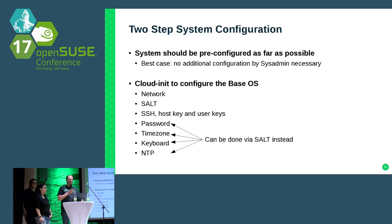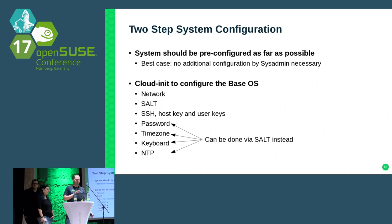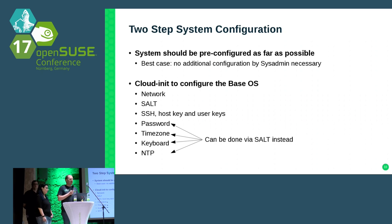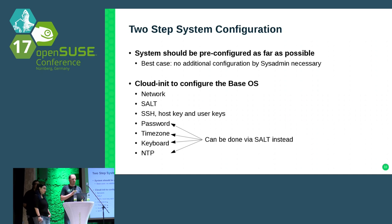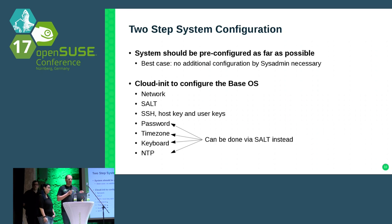About configuration: the system should be pre-configured as far as possible — in the best case, no additional configuration by the sysadmin is needed. If you do need to reconfigure, use cloud-init at the beginning. With it you can set up the network, configure Salt to find the Salt master, and install your own public SSH keys. Once Salt minions are configured, the Salt master can configure other things like password, timezone, keyboard, and NTP. But you can also do it all with cloud-init from the beginning.